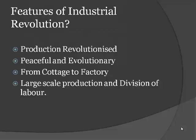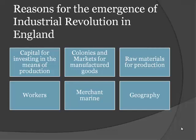Features of Industrial Revolution: production is revolutionized, peaceful and evolutionary, from cottage to factory, large scale production and division of labor. The Industrial Revolution is the name given to a series of changes that brought about a transition from production by hand to production by machine, from small scale production to large scale production, from handmade goods to machine made goods. The Industrial Revolution revolutionized methods of production; machine work replaced hand work and incredibly tremendous production was possible.